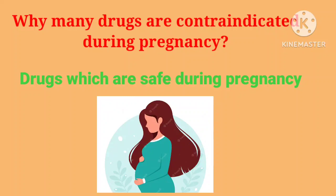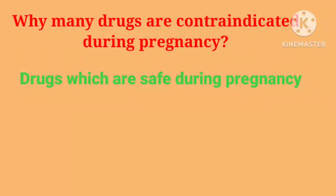Some drugs are totally contraindicated and some drugs are totally safe. There are five categories: A, B, C, D, and X. Category A and B we can safely give without hesitation — doctors will give these safely. But for C and D we have to be cautious, and for X we have to put a total full stop. Schedule X drugs during pregnancy are totally stopped.